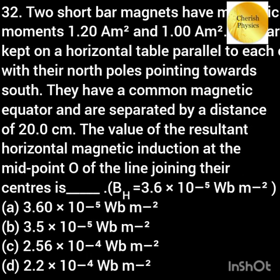Two short bar magnets have magnetic moments of 1.2 and 1 ampere meter squared. They are kept on a horizontal table with a common magnetic equator and are separated by a distance of 20 cm. The value of the horizontal magnetic induction at the midpoint O of the line joining their centers is?